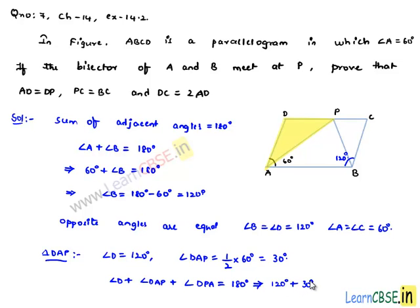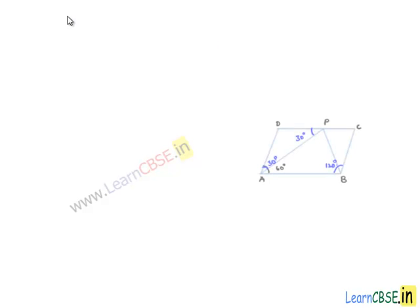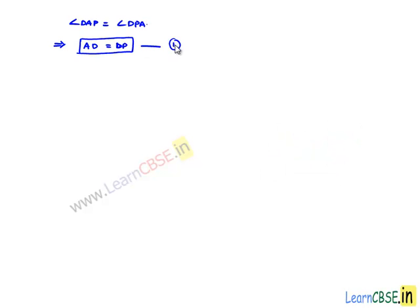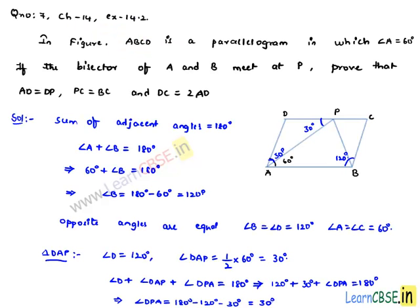This implies 120 degrees plus 30 degrees plus angle DPA is equal to 180 degrees, which gives angle DPA equal to 180 minus 120 minus 30, which is equal to 30 degrees. So we got angle DPA as 30 degrees. Since angle DAP equals angle DPA, the sides opposite to equal angles are equal. Therefore AD will be equal to DP. Let this be equation 1.